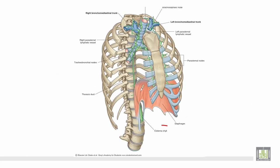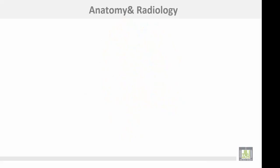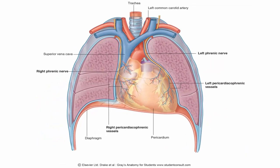The thoracic duct arches to the left side, just behind the carotid sheath, to end at the junction between the left subclavian and left internal jugular veins. This figure also shows the thoracic duct starting in the abdomen at the cisterna chyli, ascending on the right side of the esophagus through the posterior mediastinum, then the superior mediastinum, until it ends at the junction between the left subclavian vein and left internal jugular vein.